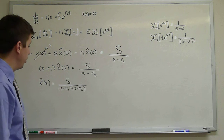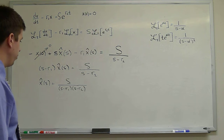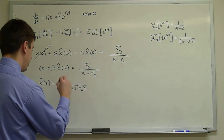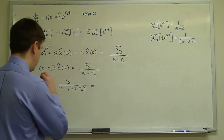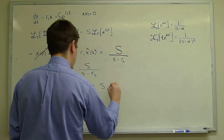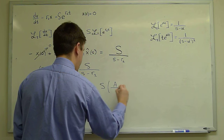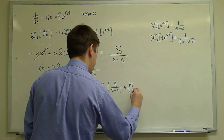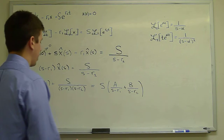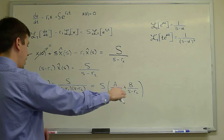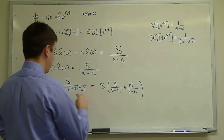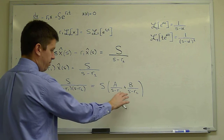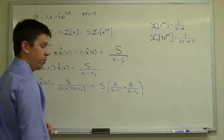Now in general we'll have to use partial fractions to break this into simpler pieces. Pulling out the factor of capital S, we write it as A over (S minus R1) plus B over (S minus R2). This comes about from the partial fractions theorem, and now we have to find the coefficients A and B.